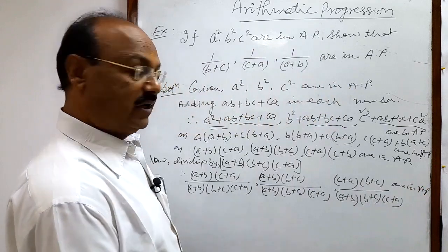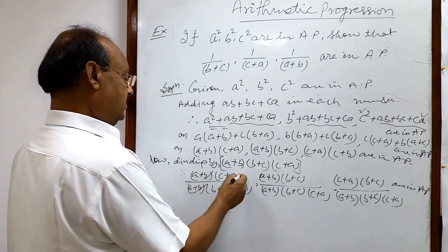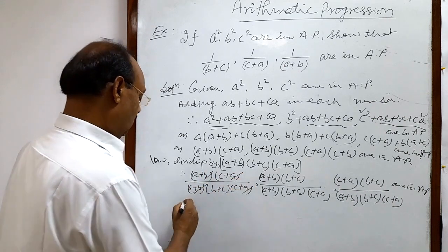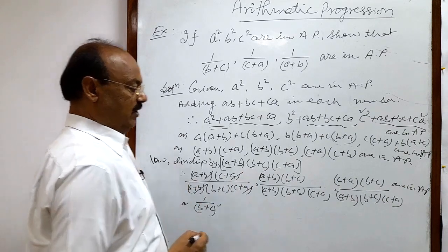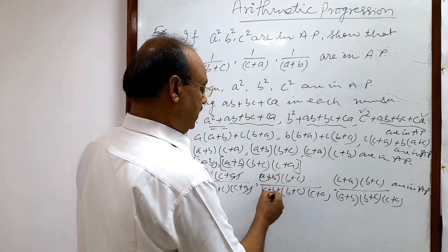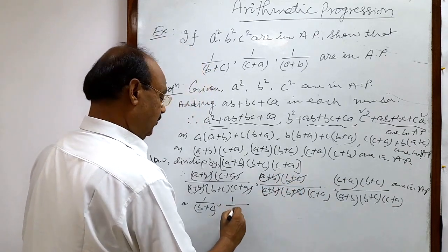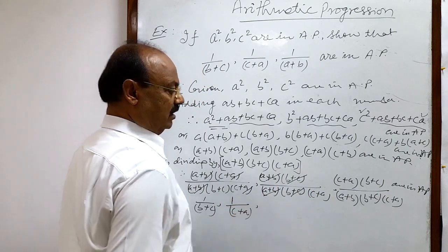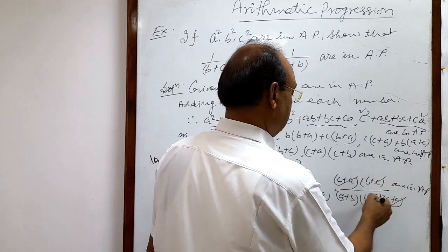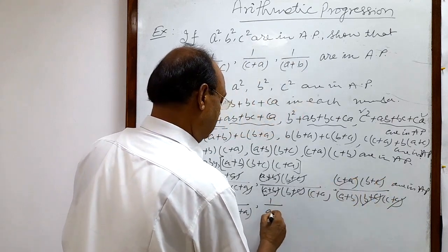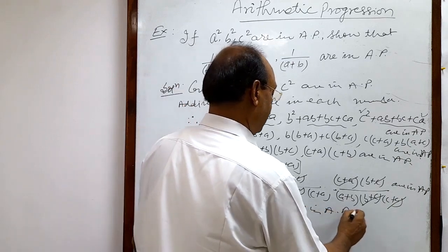Now you see what we are getting: in the first term, (a+b) and (c+a) cancel out, giving us 1/(b+c). In the second term, (a+b) and (b+c) cancel out, giving us 1/(c+a). In the last term, (c+a) and (b+c) cancel out, giving us 1/(a+b). These are in AP — proved.